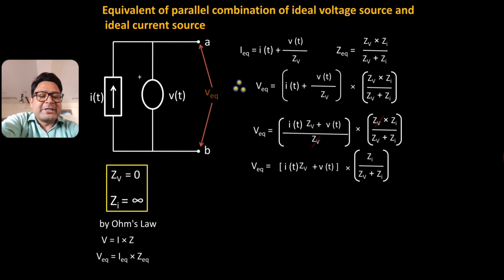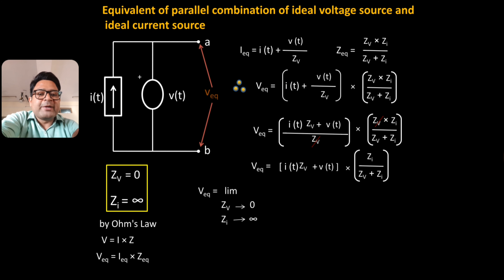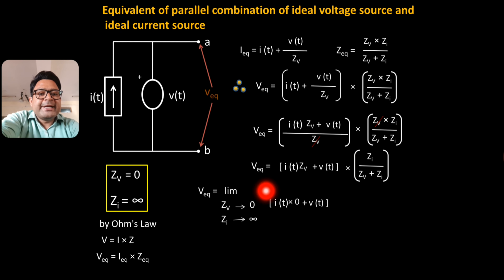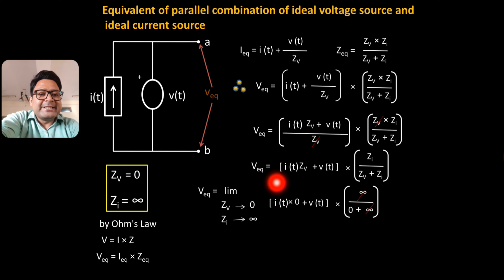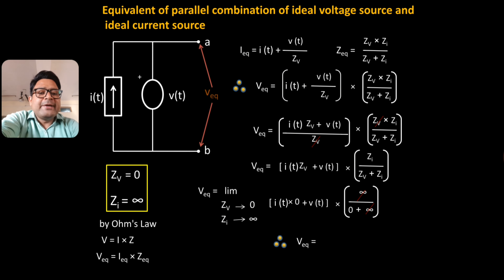Now we apply the limits: ZV tends to 0 and ZI tends to infinity. Substituting ZV = 0 and ZI = ∞ into VEQ = (I(T) × ZV + V(T) × ZI) / (ZV + ZI), we get (I(T) × 0 + V(T) × ∞) / (0 + ∞). The infinities cancel, I(T) × 0 = 0, and only the V(T) term remains. Therefore, VEQ = V(T).